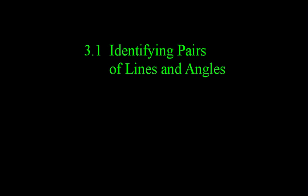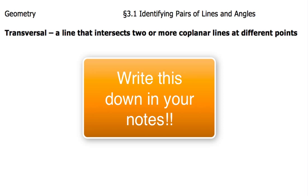We're going to take a look at the second part of this section, 3.1, identifying pairs of lines and angles, and this time we're really going to focus on the pairs of lines and the angles part. First we've got to define one of our words here, and that word is transversal. A transversal is a line that intersects two or more coplanar lines at different points. That word transversal is going to come into play a lot throughout the rest of this chapter.